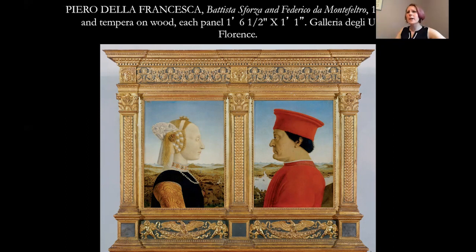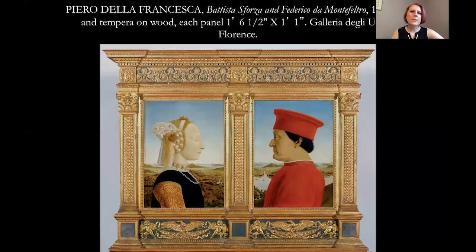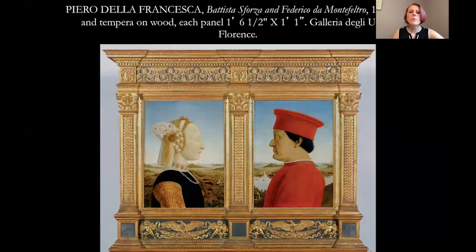In the North they have more of a three-quarter view, but here we have just a profile view, which was preferred in Italy because that's how people were shown on Roman coins - again the Renaissance being a rebirth of classical art and culture, with ancient Greece and Rome, especially Rome, being the focus in Italy.